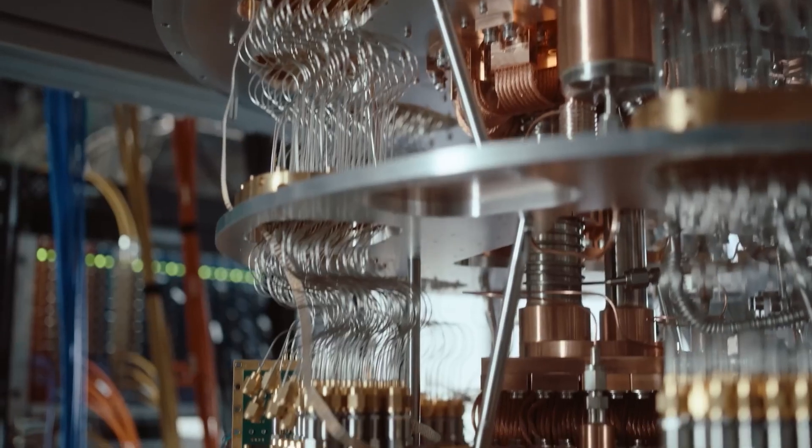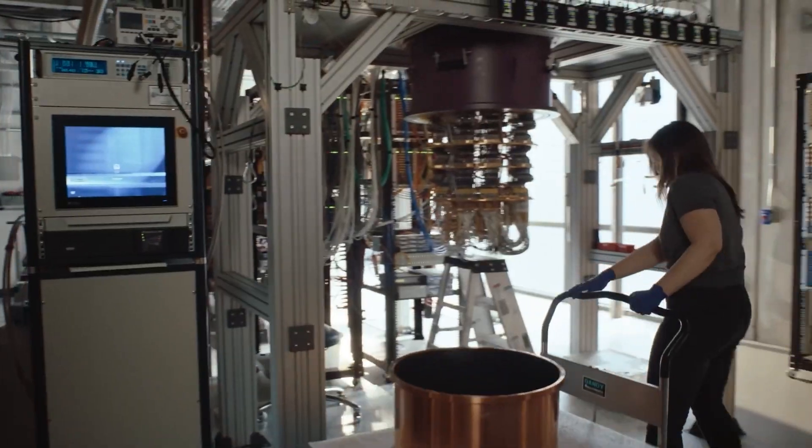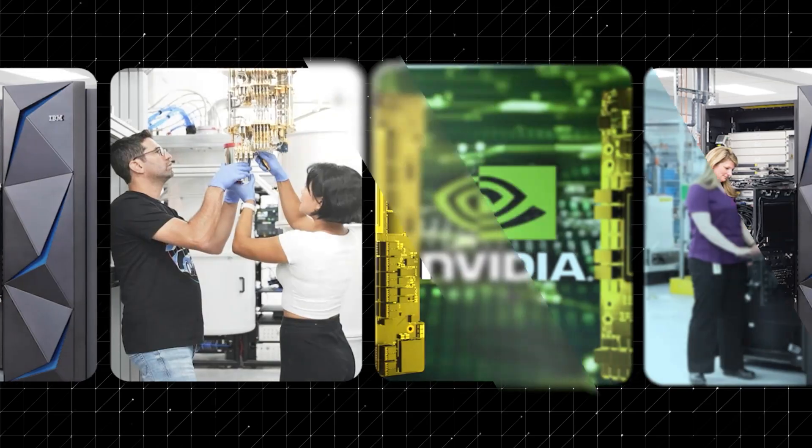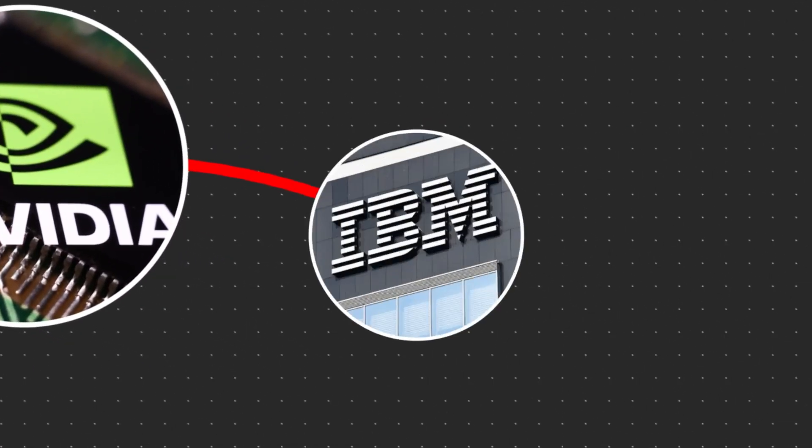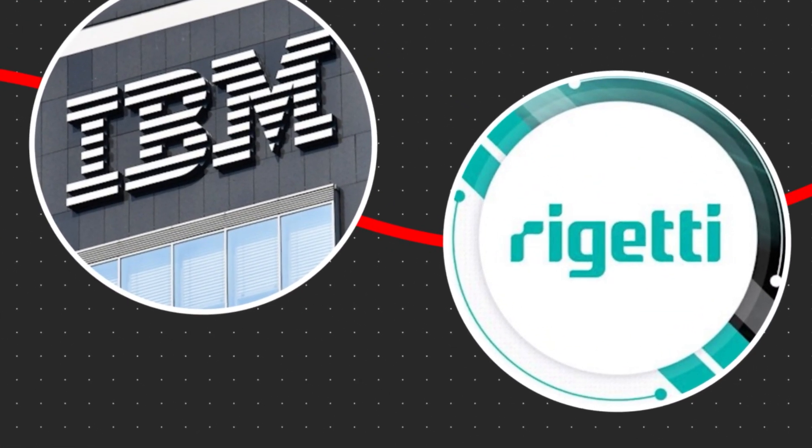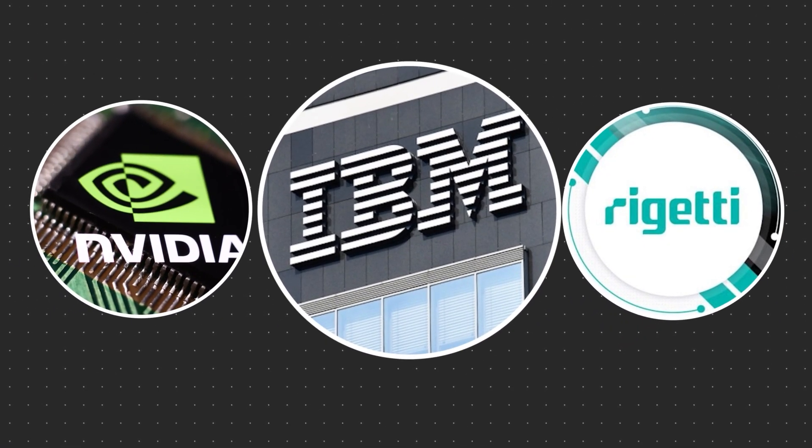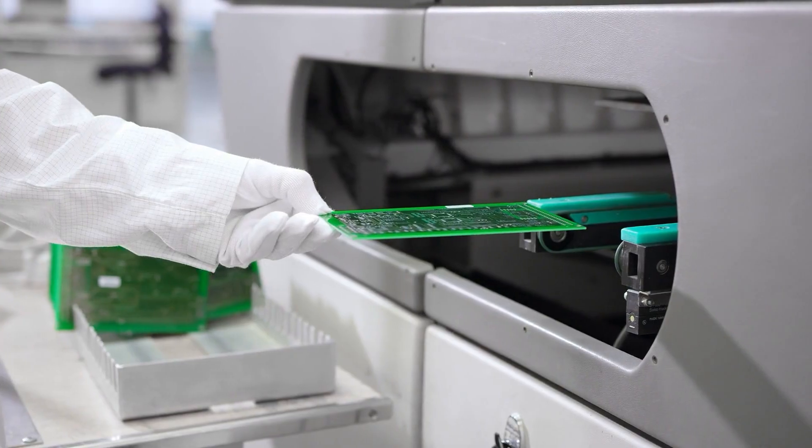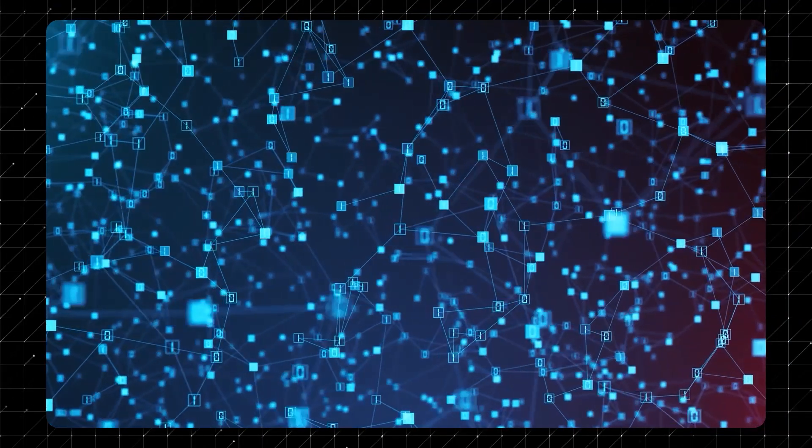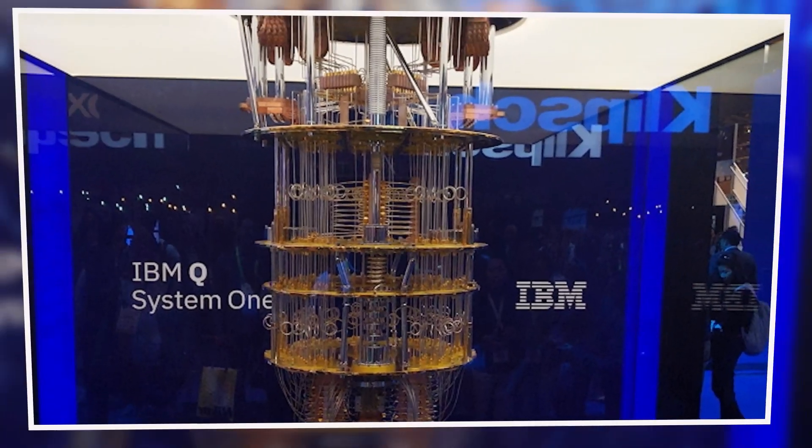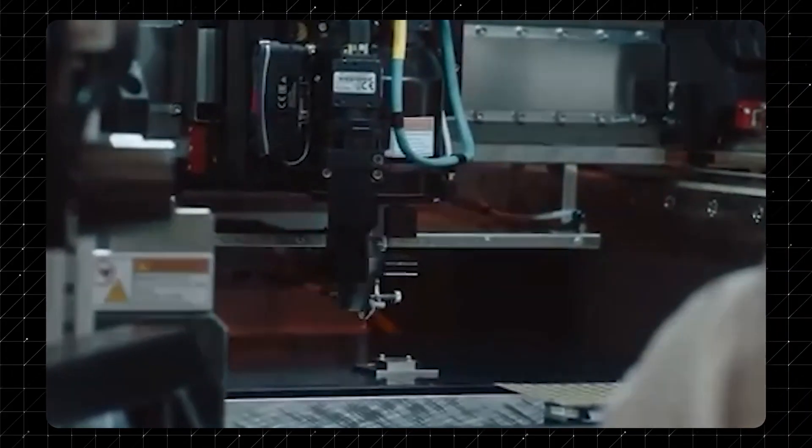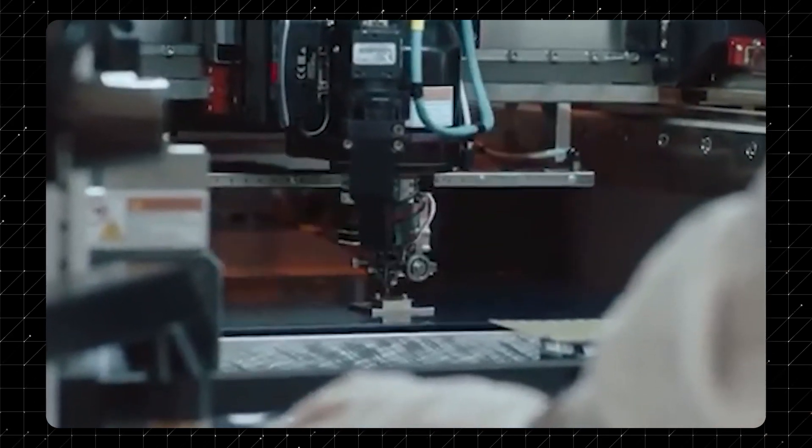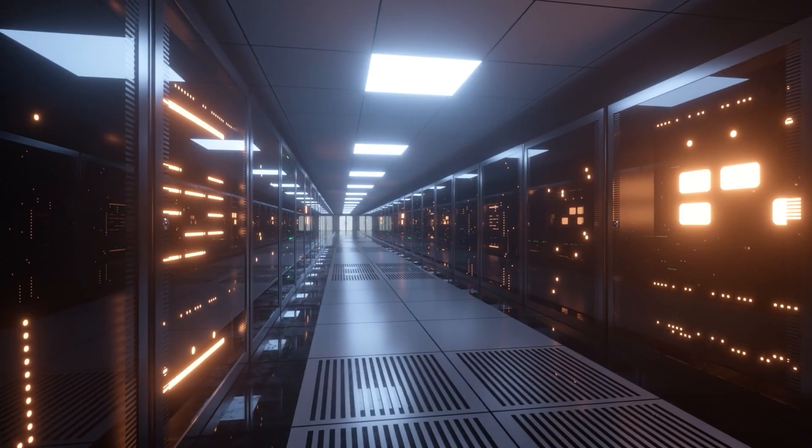Google is not the only company racing to unlock the full potential of quantum computing. IBM, Rigetti, and other tech giants are also making strides in this field. But Willow's unique combination of scalability, error correction, and speed sets it apart from the competition. These competitors have made impressive progress, but none have yet achieved the breakthrough that Willow represents. An advanced quantum chip capable of scaling up, maintaining low error rates, and executing computations at unparalleled speeds. Whereas others have made incremental progress, Willow signifies a generational leap forward in quantum technology.